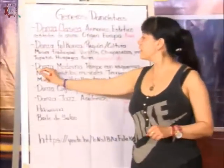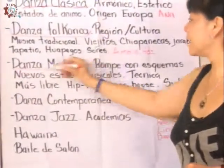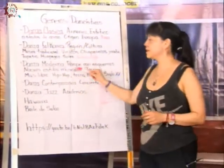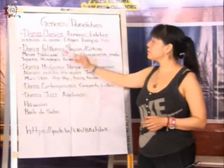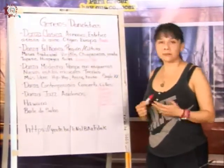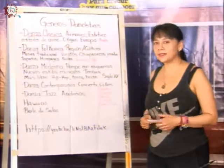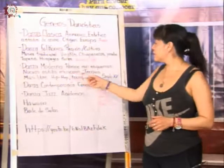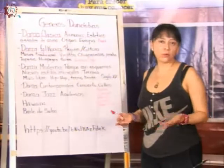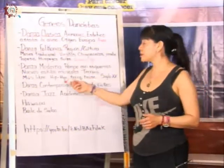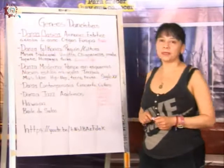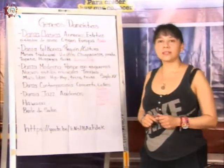Posteriormente vemos lo que también existe como danza moderna. Esta danza rompe con todos los esquemas de los nuevos estilos musicales. Esta danza rompe con los esquemas que ya tenemos establecidos en la danza clásica. Sí tiene algunos estilos, se forma bajo una técnica, pero no es una técnica tan estricta como la danza clásica. La danza moderna es muy libre, se puede bailar incluso con tenis, zapatos o botas de diferentes estilos. Sus representantes son el hip hop, el tecno, el house. Surge a partir del siglo XX, rompiendo con los estereotipos establecidos de la danza clásica.